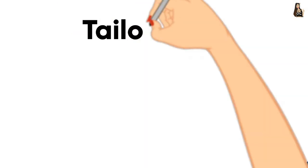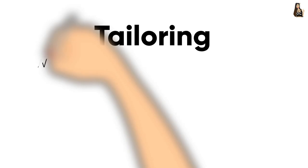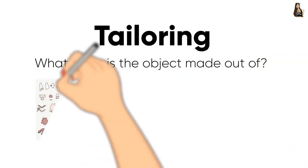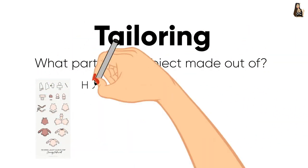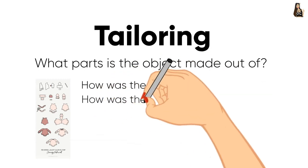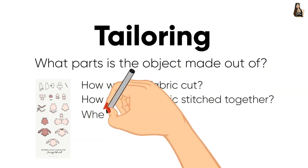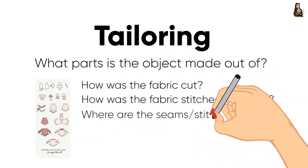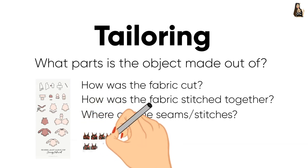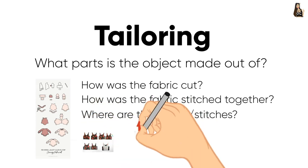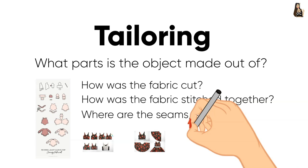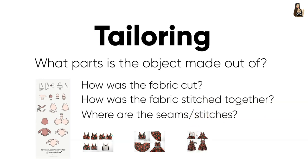The first thing is tailoring. What parts is the object made out of? If it's a piece of clothing, how was the fabric cut and how was it stitched together? Where are the seams, where are the stitches? If you're not sure how to cut the fabric, you can find many free tailor patterns online, so just use these for a start.